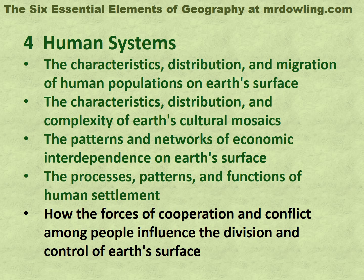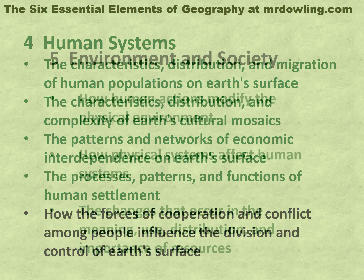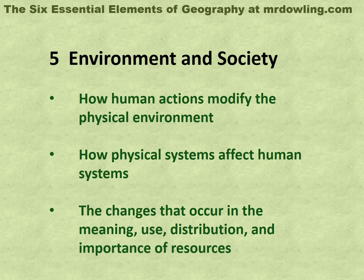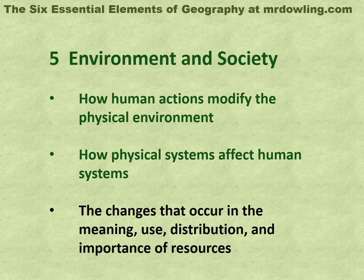How the forces of cooperation and conflict among people influence the division and control of Earth's surface. Environment and society: how human actions modify the physical environment, how physical systems affect human systems, and the changes that occur in the meaning, use, distribution, and importance of resources.